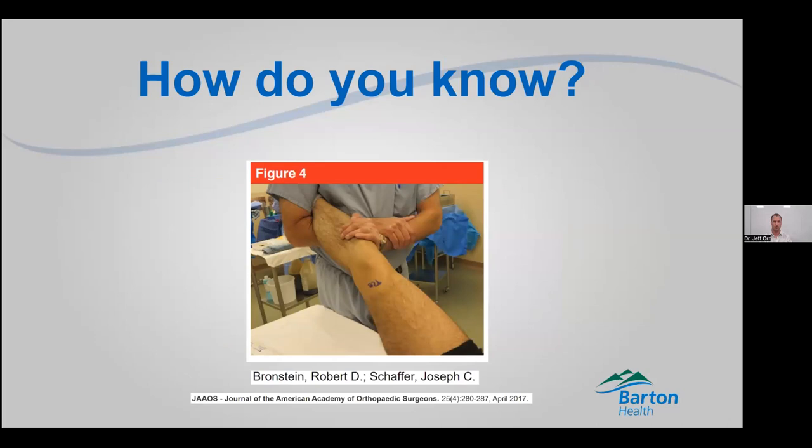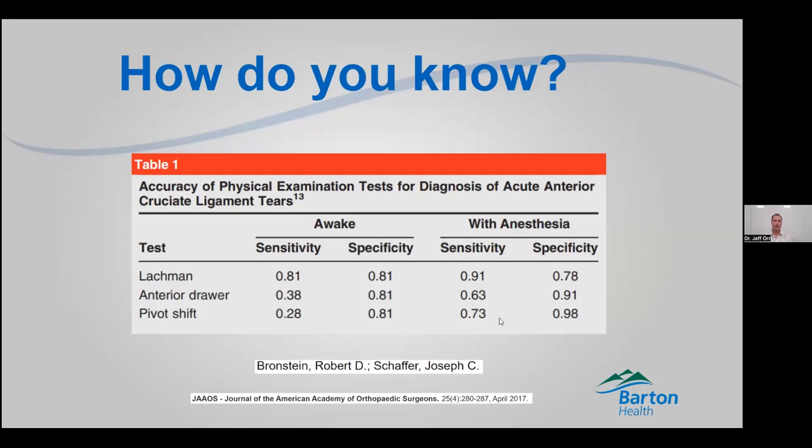Another thing we can do is actually recreate that internal twisting of the tibia. This is a little more difficult to do because it hurts, so we typically don't routinely do that in the office. But in surgery, before we do anything, we'll typically do these tests as well — when the patient is asleep, we get a much more accurate study because no one is tense or guarding.